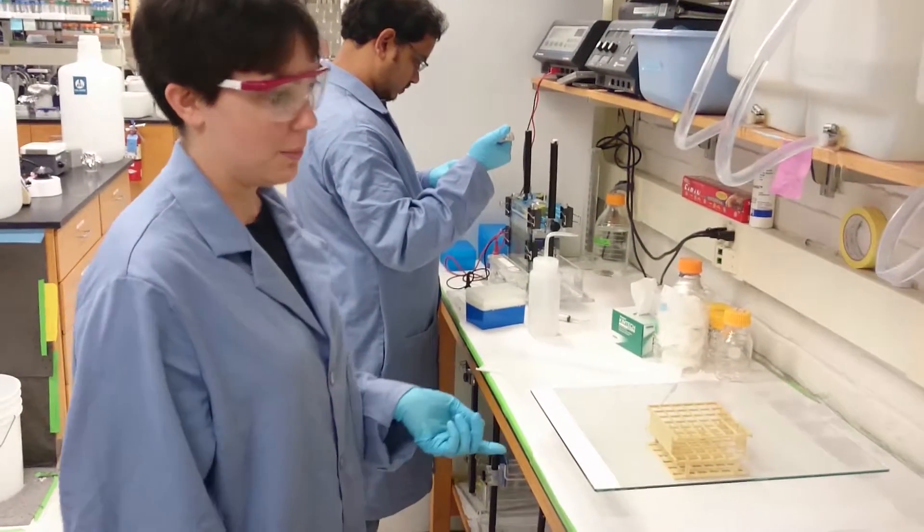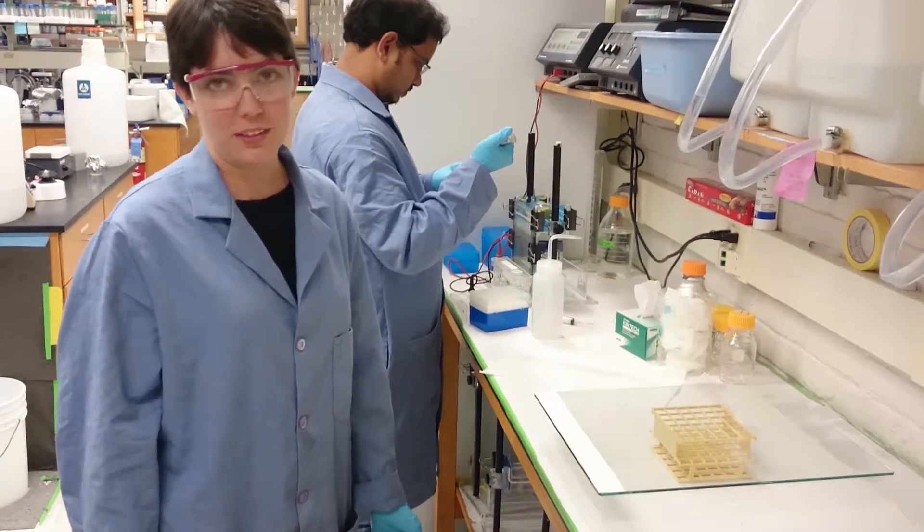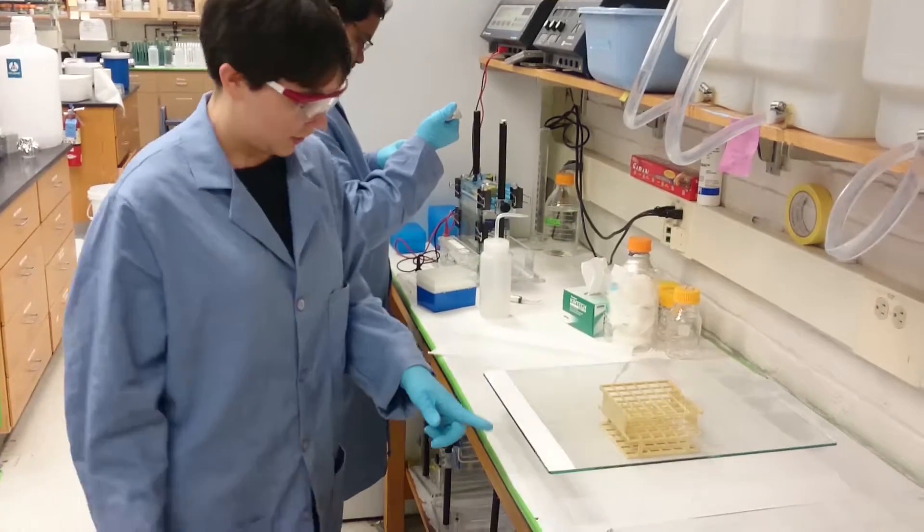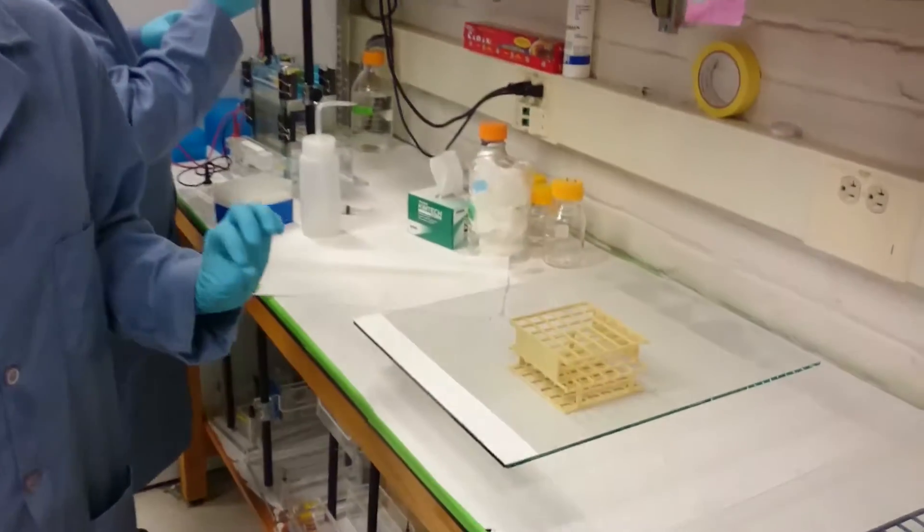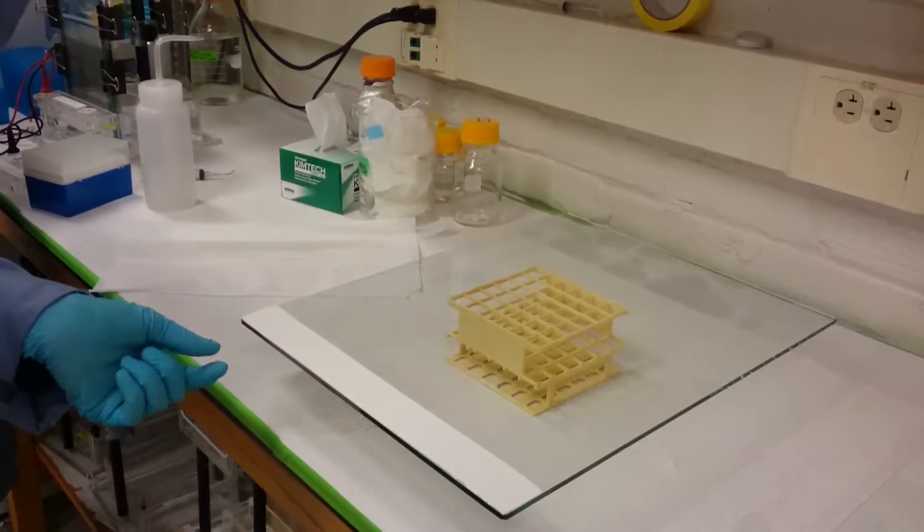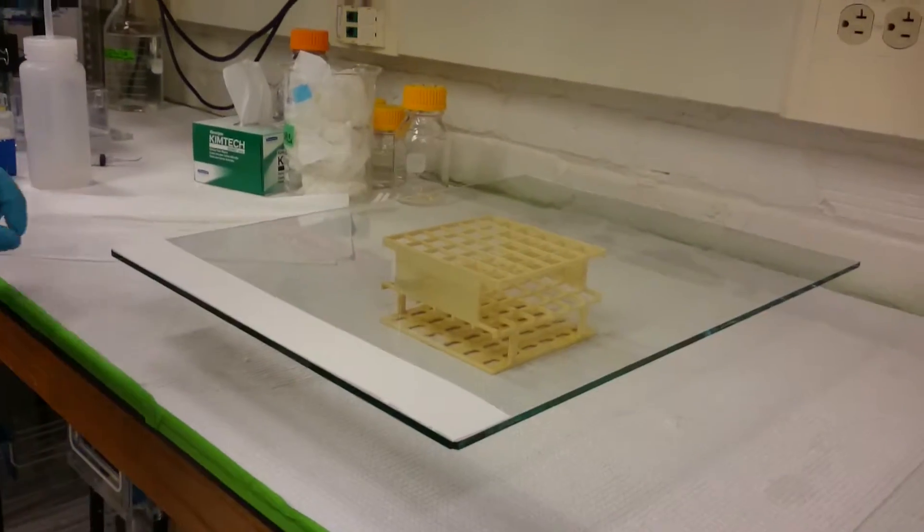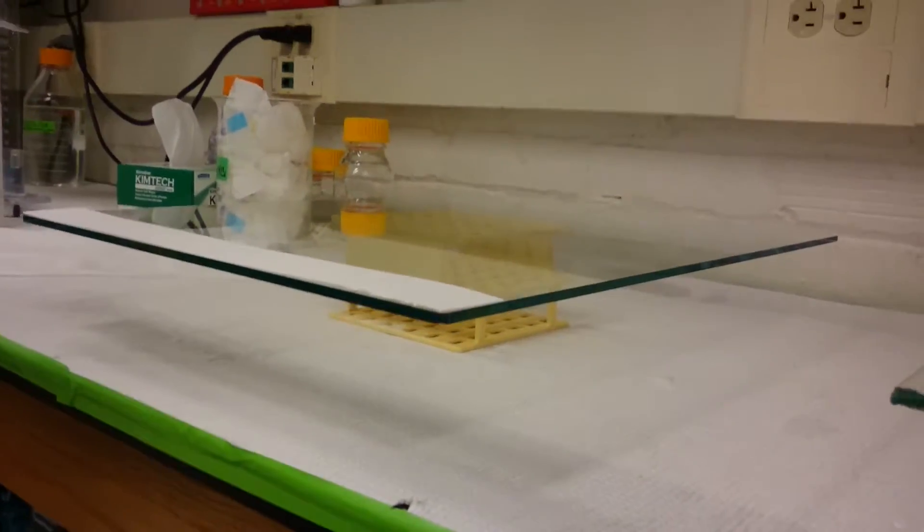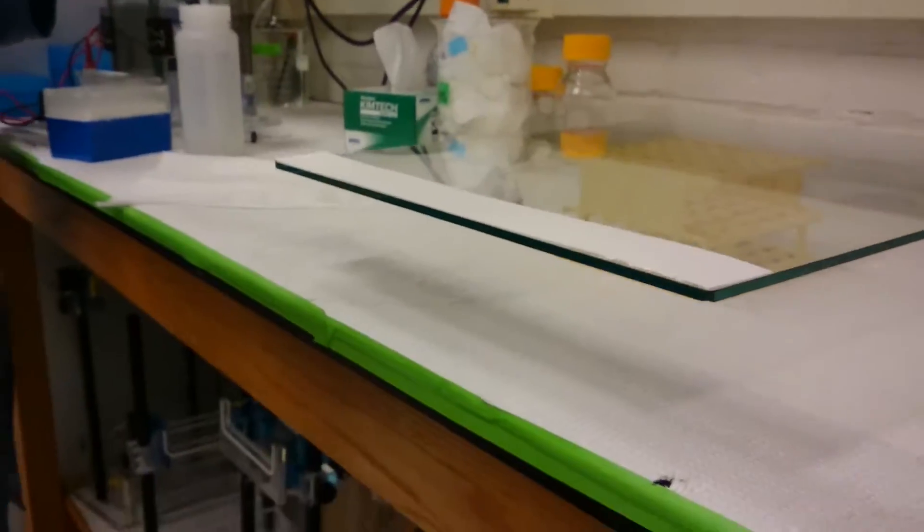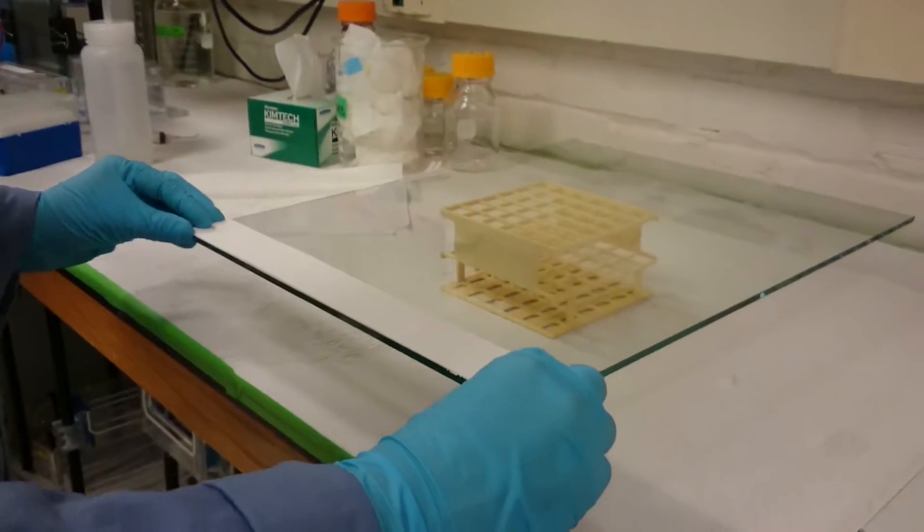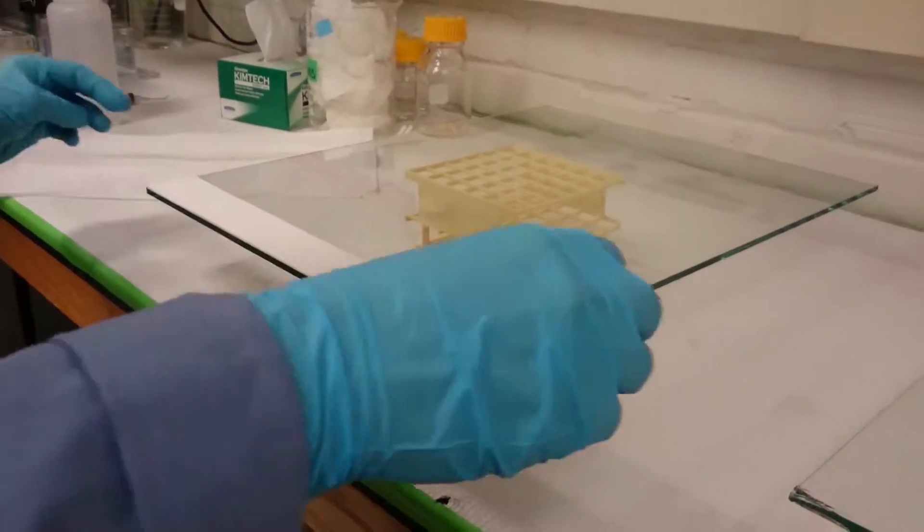And now I'm going to assemble the two plates so that I'm ready to pour the gel. So here at the bottom I've put a stack of two sheets of thick filter paper. Two of them are just about the same thickness as the bottom of our spacers, and I've cut it so that they're just the width of the plate.